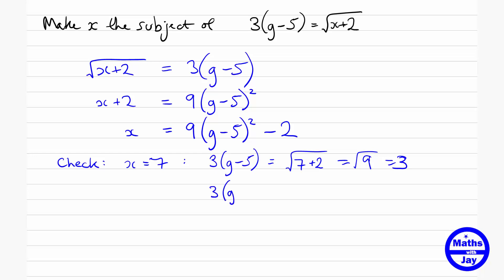So if 3 times g minus 5 is equal to 3, let's just write that down so we can see what we're doing, then g minus 5 is 1. So g is equal to 6. So what we're saying is that given the original formula, if x is 7, then g is 6.